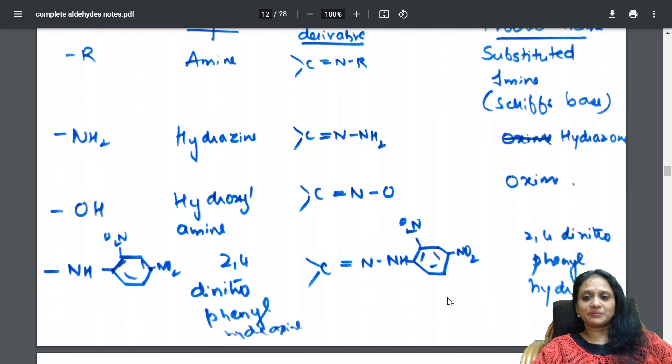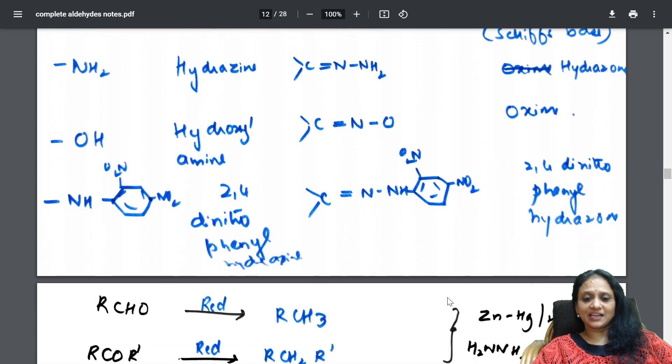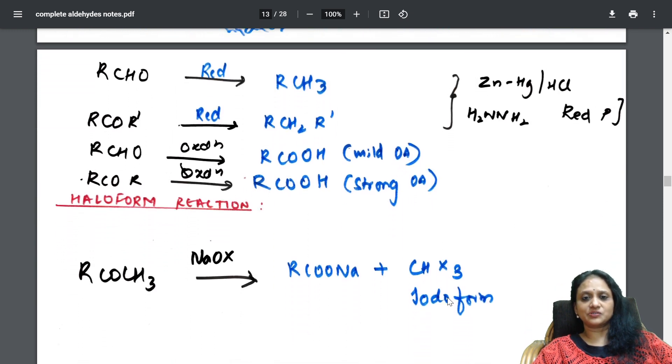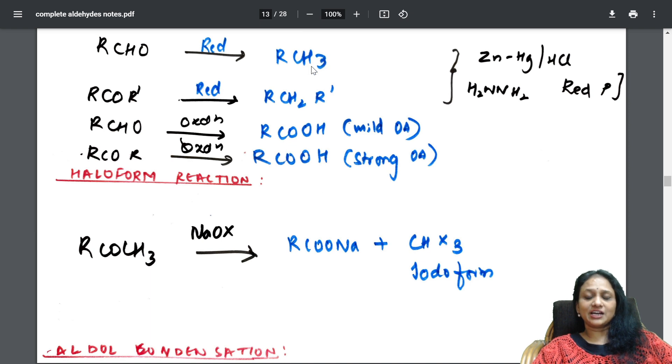So, slowly from the chemical properties of aldehydes, I have taken you into all the reactions where you will be getting hydrocarbons. Here you will be getting hydrocarbons in the presence of zinc, amalgam, hydrazine. As you have seen Wolff-Kishner reaction and Clemmensen reduction, everything all together. So, here reduction and oxidation, both the reactions I have given using mild oxidizing agent and strong oxidizing agent.